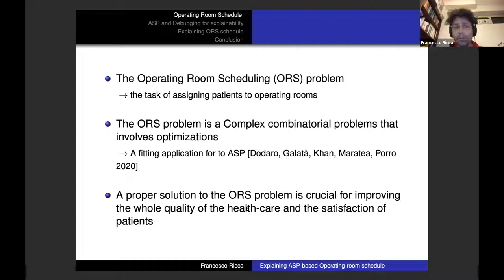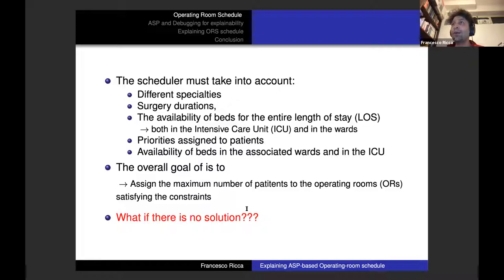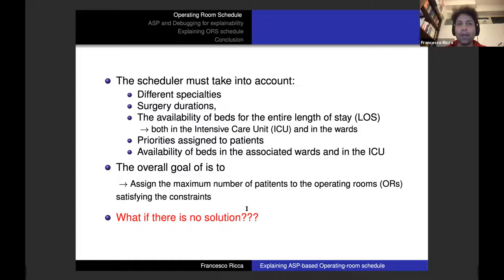There is an ASP-based solution for the operating room scheduling problem, but sometimes the system is not able to provide answers at all. If you have a schedule, that's fine — but what if you don't? This becomes a very important question, because the user cannot look inside the program and just receives a message like 'there is no way to allocate patients to the operating room.' Maybe there are too many constraints, too many patients, or the duration of a surgery is longer than the available time. The system still has to provide an explanation for this undesirable outcome.